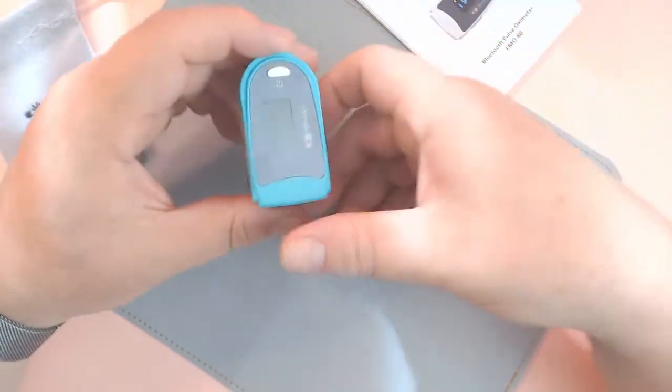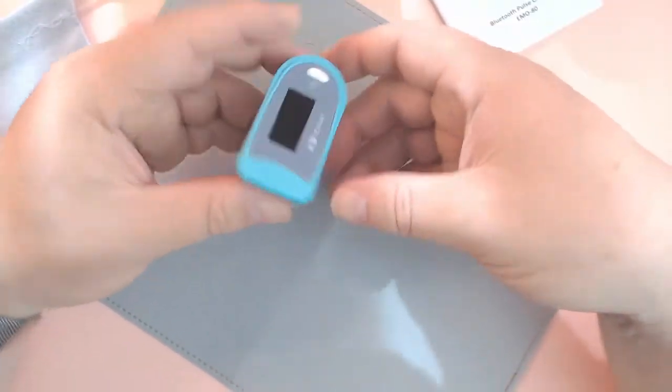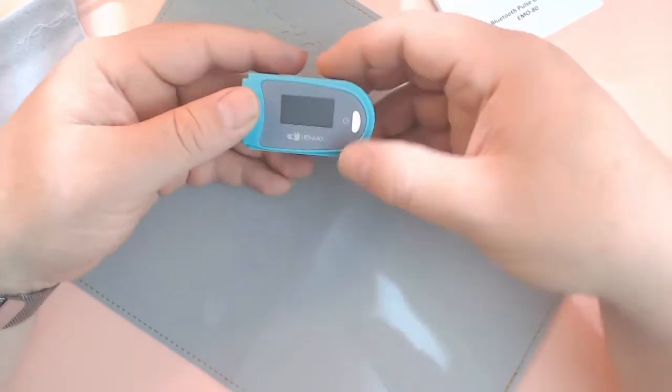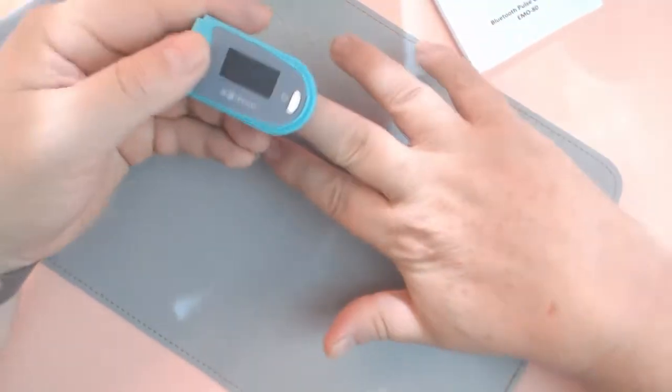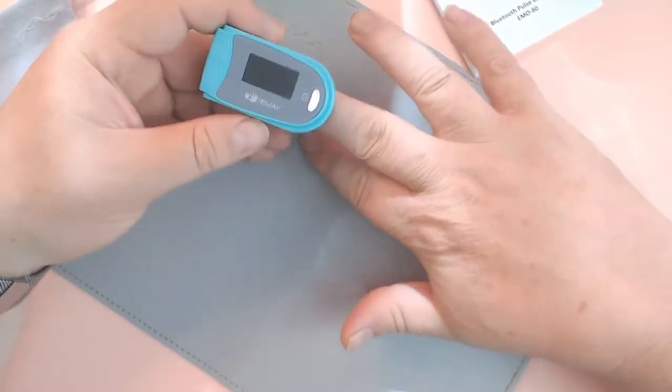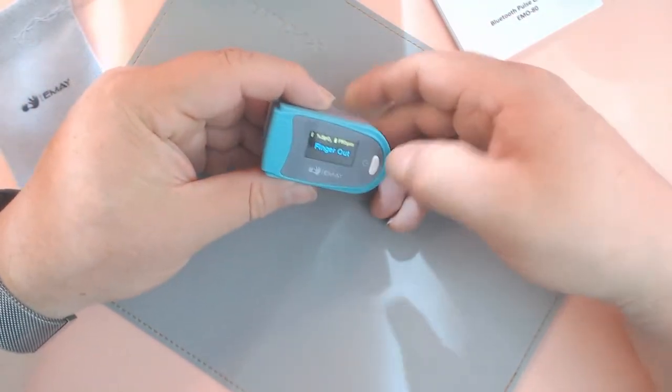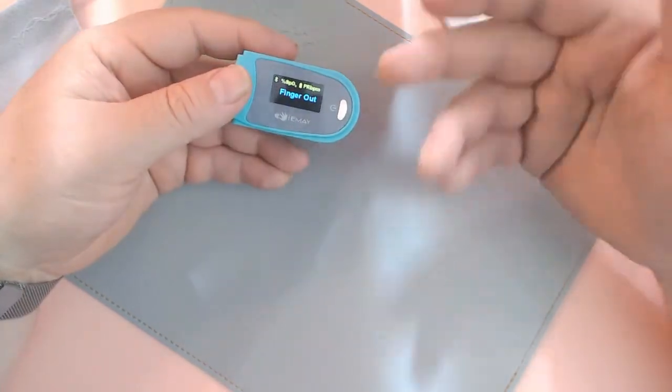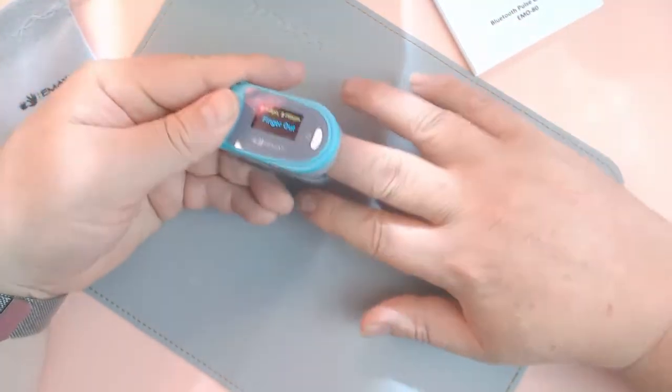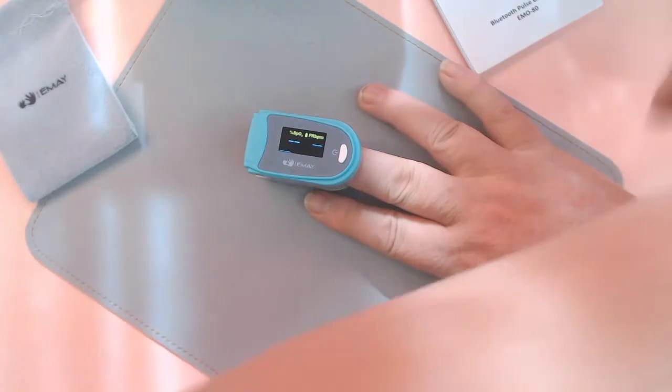So what you do is just have a regular—sometimes it'll just turn on automatically. I have a few different ones, but there we go. So it's right now saying that, you know, finger's not in there. Drop it in and it keeps track.